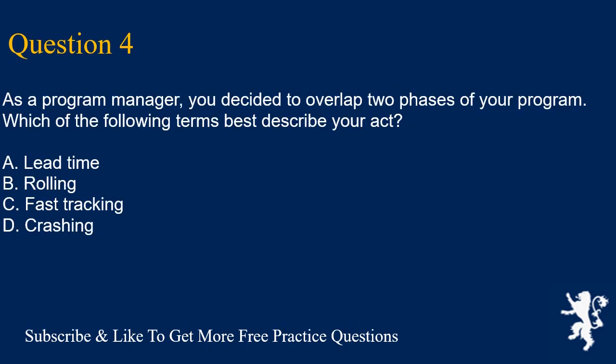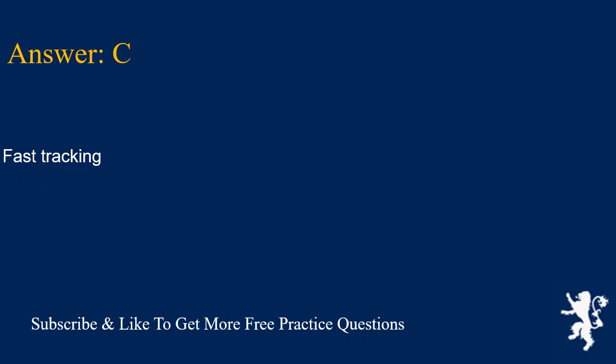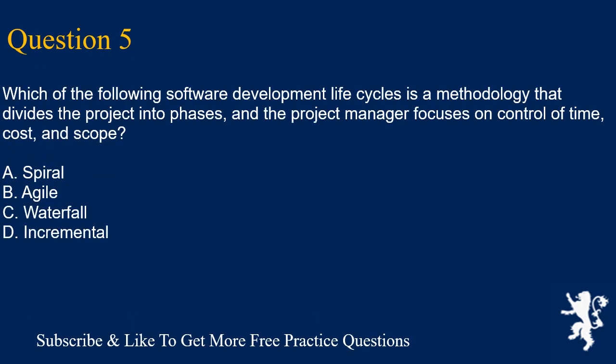Question 4: As a program manager, you decided to overlap two phases of your program. Which of the following terms best describes your act? A. Lead time. B. Rolling. C. Fast tracking. D. Crashing. Answer is C. Fast tracking.